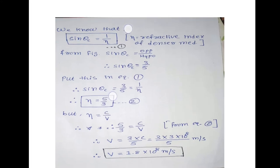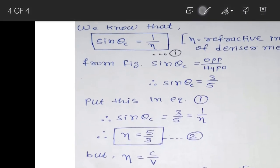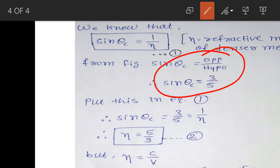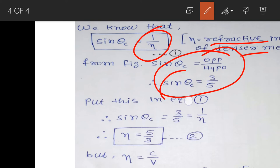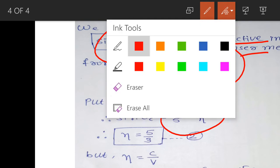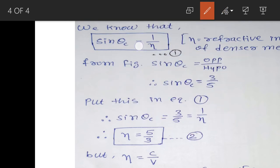So sin(θc) = 3/5. Also, from the topic of total internal reflection, we have the formula sin(θc) = 1/η, where η is the refractive index of the denser medium from which the light is coming out. Comparing sin(θc) = 3/5 with sin(θc) = 1/η, we get 1/η = 3/5, so η = 5/3.